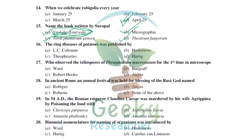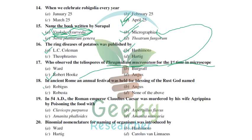The ring disease of potato was published by L.C. Coleman. Hashimoto first proved the transmission of plant viral diseases through vectors using rice dwarf disease. Robert Hooke was the first man to observe the teliospores of Phragmidium mucronatum in a microscope. He wrote the famous book 'Micrographia.' In ancient Rome, the annual festival held for blessing the rust god was called Robigalia, and the god's name was Robigus.